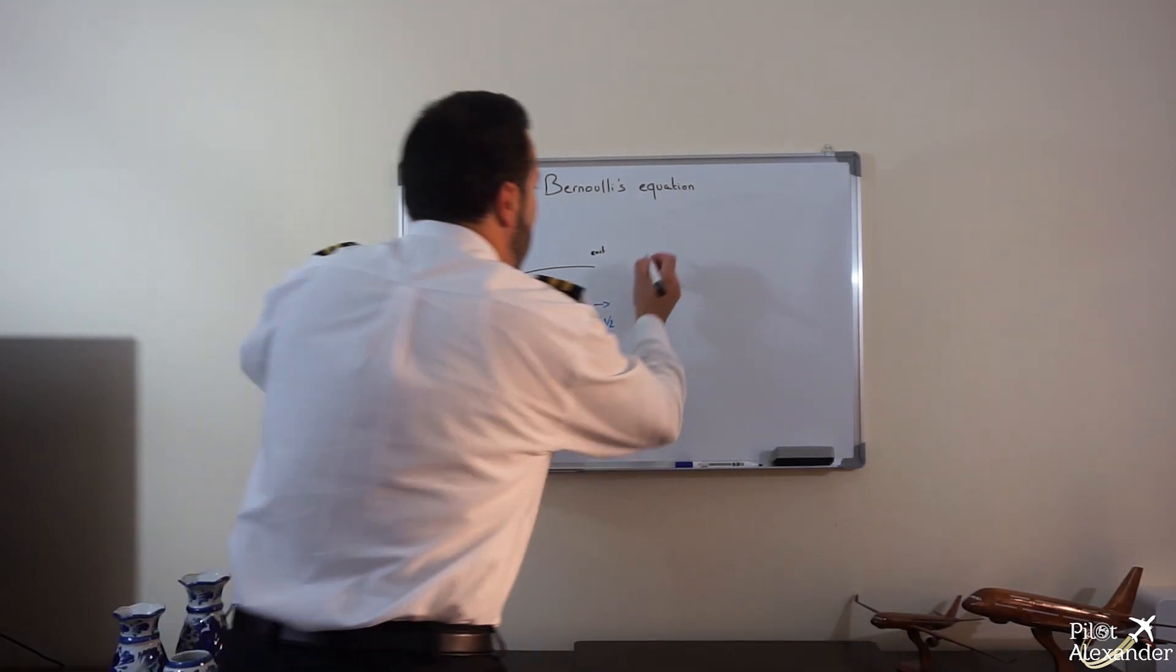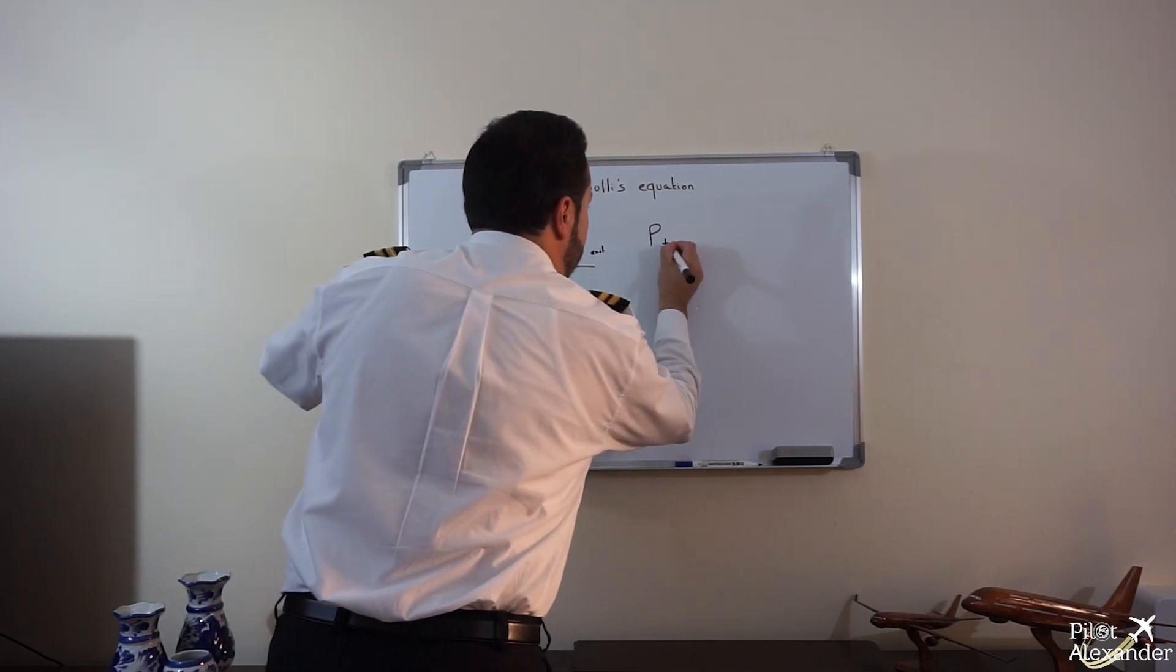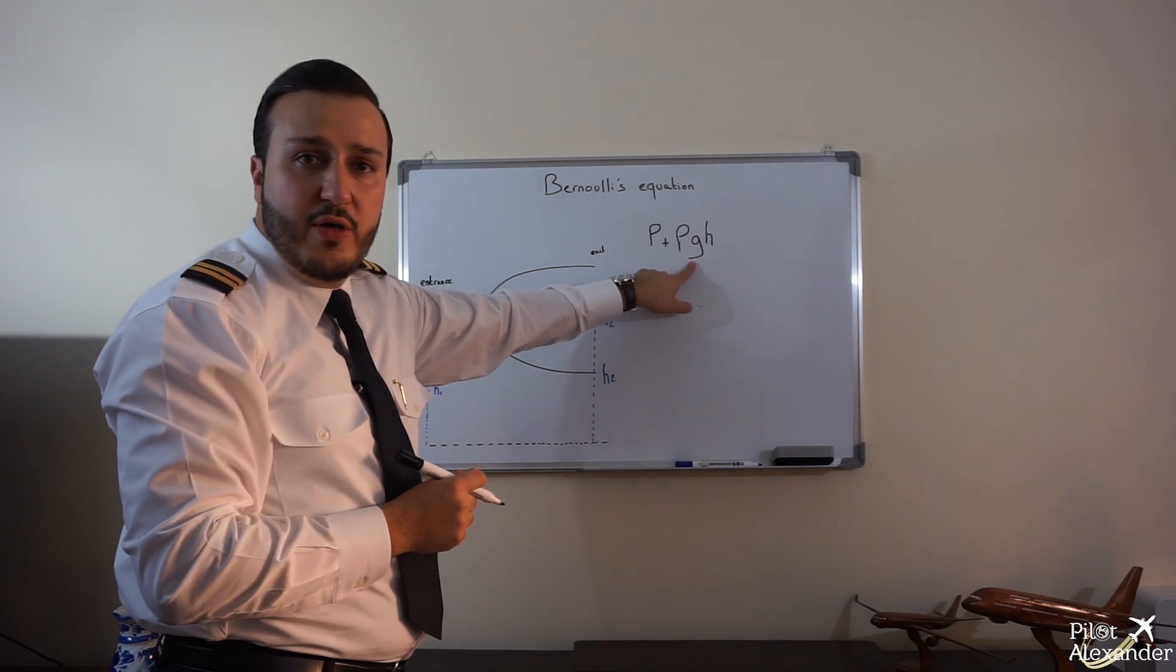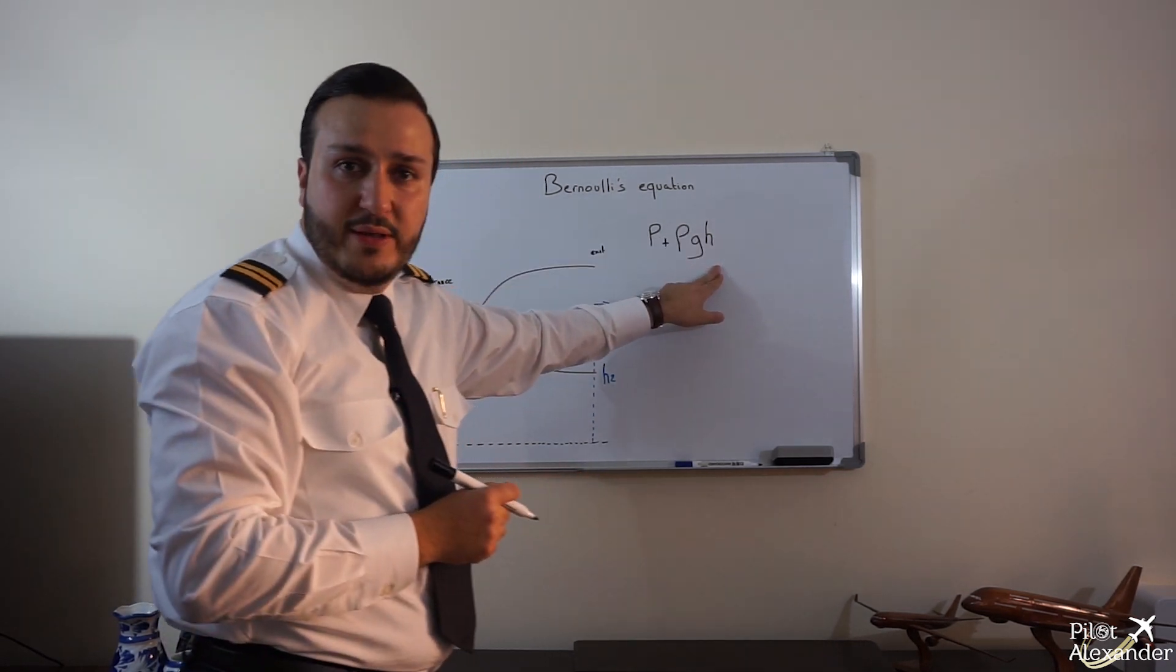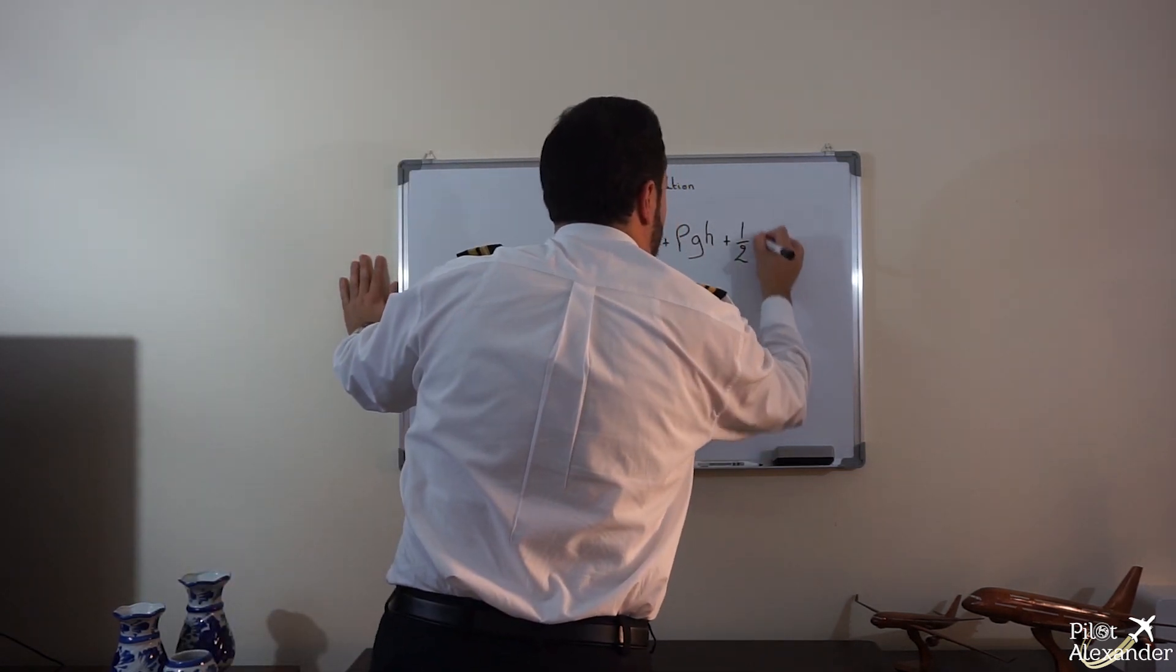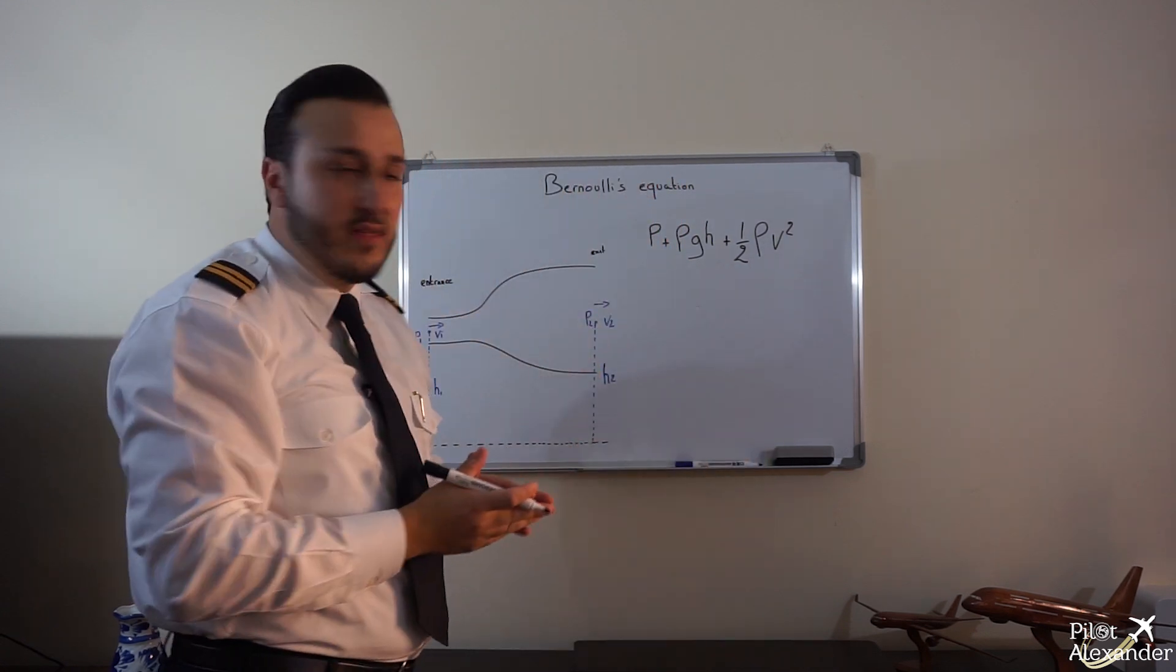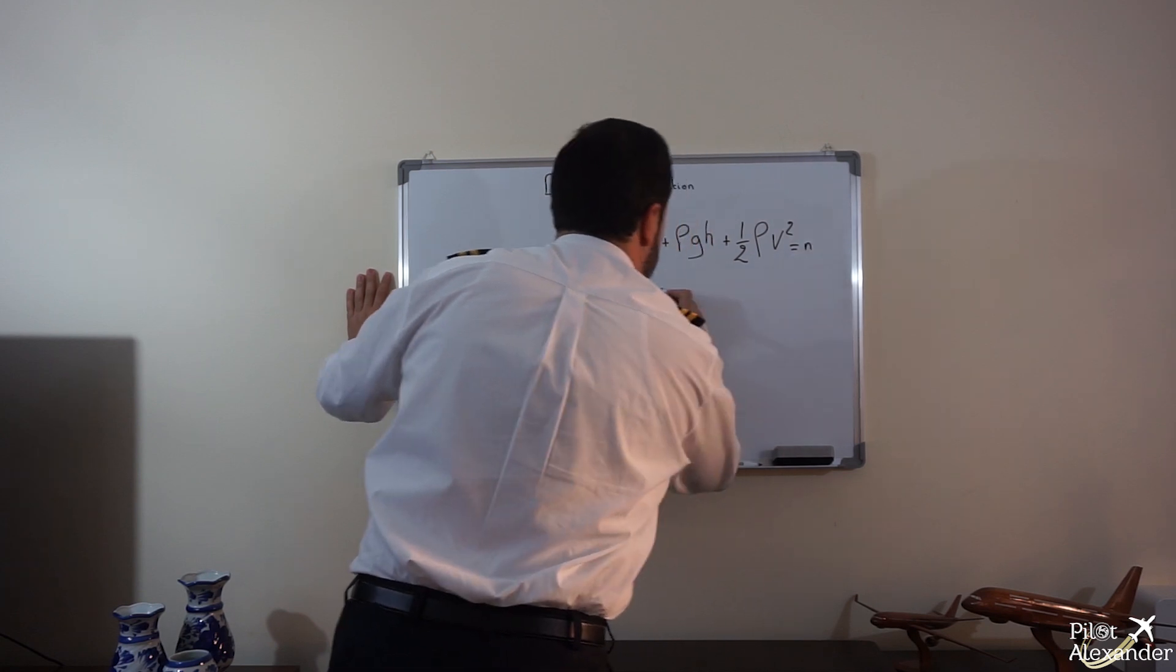Bernoulli tells us that the pressure inside this tube at any point plus ρgh, which is the density of the fluid times the acceleration due to gravity times the height at any point inside this tube, plus half of the density of the fluid ρ times velocity squared, or the speed of this flow, is equal to a constant.